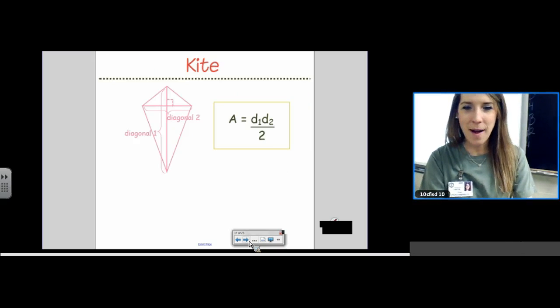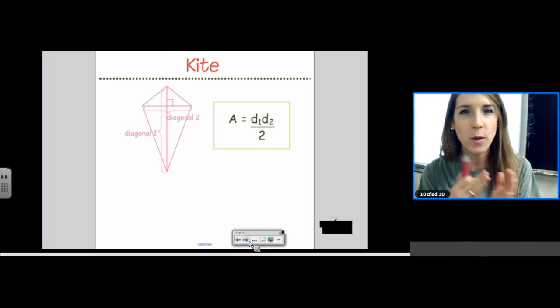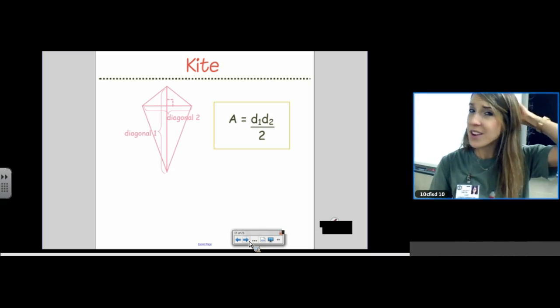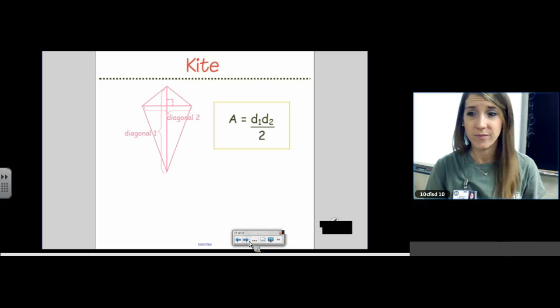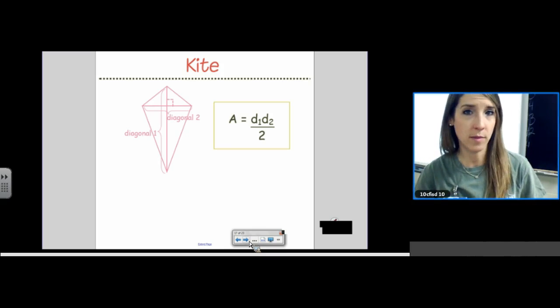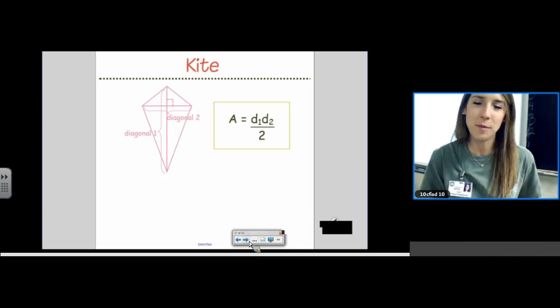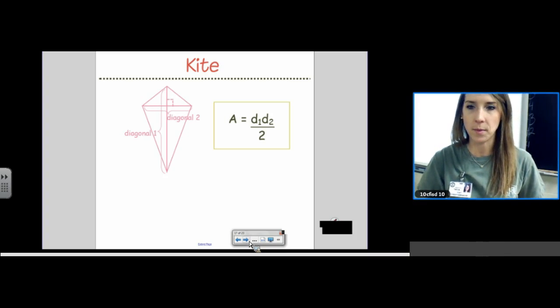The great news about kites are, look at that, same exact formula as rhombus. The bad news is, there is no kite on your formula chart. Not there. It doesn't exist. But, since rhombus is on your formula chart, all you have to remember is that kite and rhombus are the same. You don't have to remember their formula, but you do need to remember that they have the same formula.